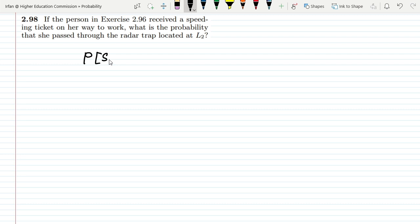I want to find out the probability that it is trapped at S2 given that it has received the speeding ticket on her way. So it has already been trapped. What is the probability that after receiving the speeding ticket the vehicle is trapped at location L2?